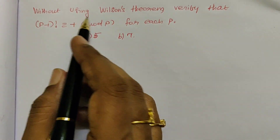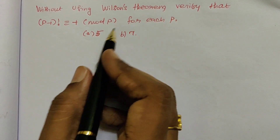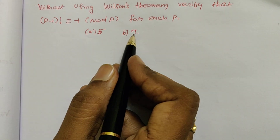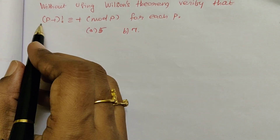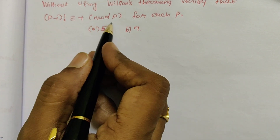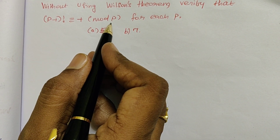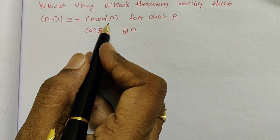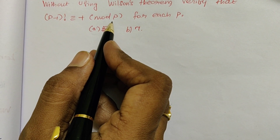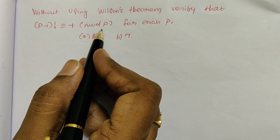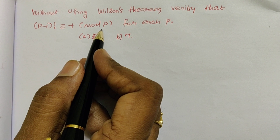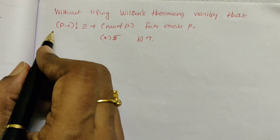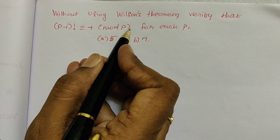By using Wilson's theorem, we can easily say that when 5 and 7 are prime numbers, this congruence relation is satisfied. But here they asked to verify without using Wilson's theorem, so we need to verify this congruence relation directly.